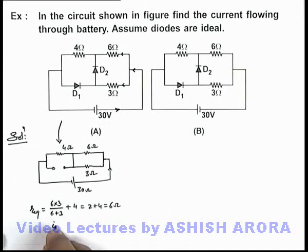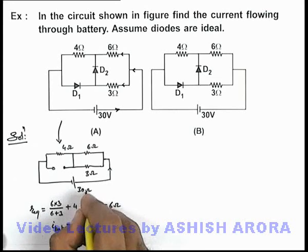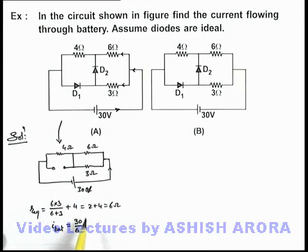And current through the battery can be directly given as 30 by 6, this is a 30 volt battery, so it is 30 by 6 that will be 5 ampere current which will pass through it. That will be the answer to this problem.